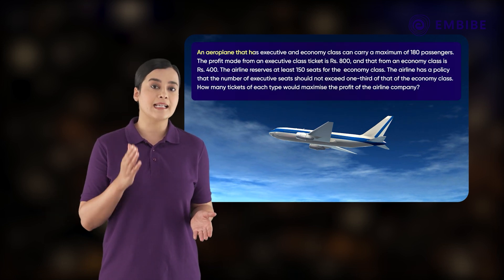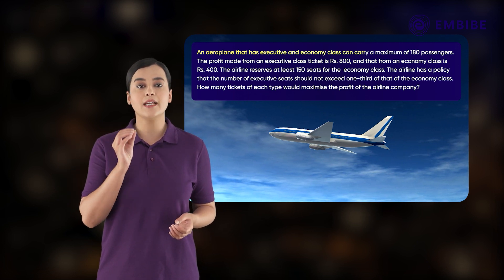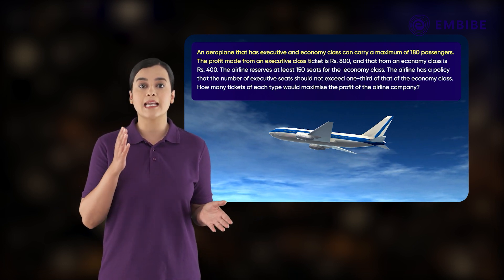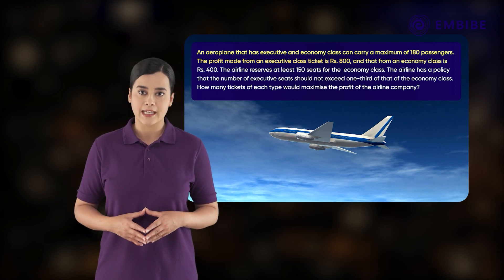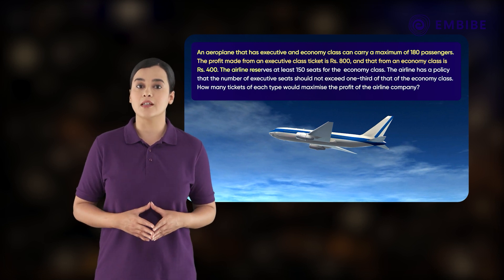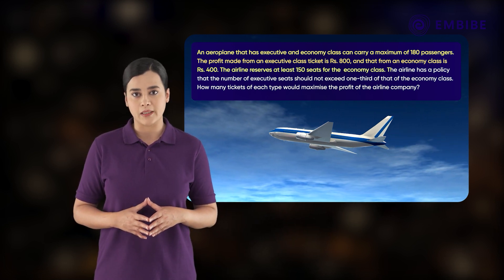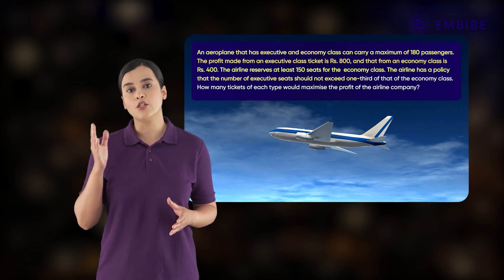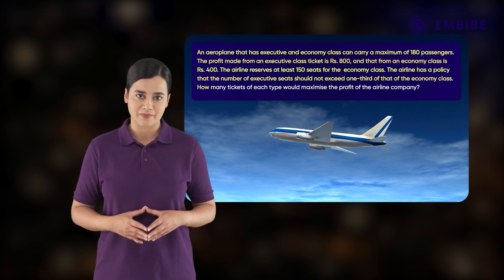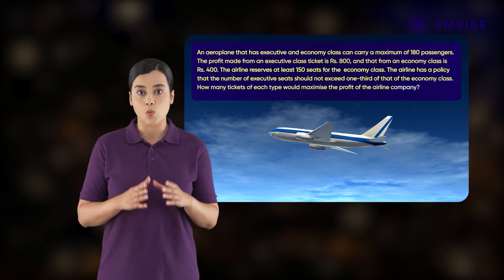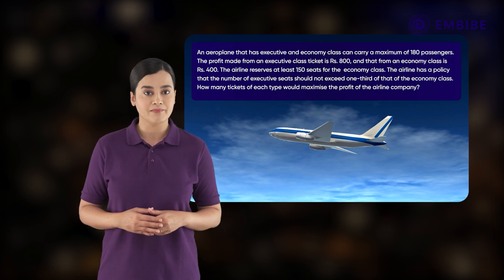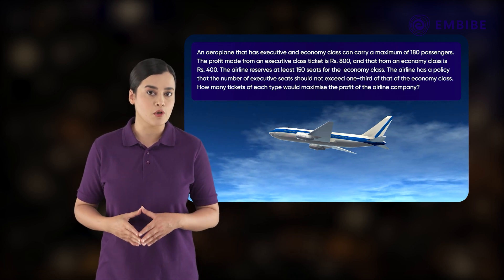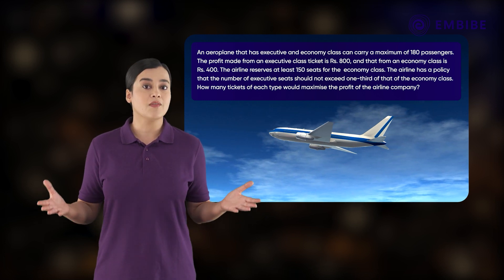An aeroplane that has executive and economy class can carry a maximum of 180 passengers. The profit made from an executive class ticket is Rs. 800 and that from an economy class is Rs. 400. The airline reserves at least 150 seats for the economy class, and the number of executive seats should not exceed one third of that of the economy class. How many tickets of each type would maximize the profit? Converting this to a linear programming problem helps find the optimal number of tickets in each category for maximum profit.